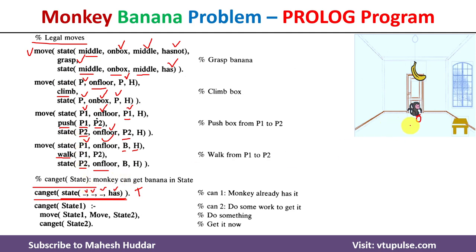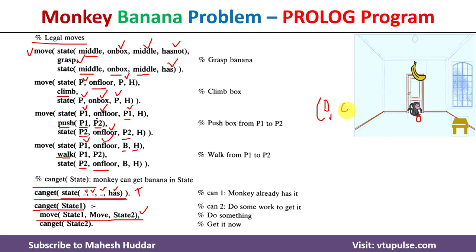At the initial stage, the monkey is present at door, the box is present at window, and the banana is hanging exactly at the middle of the room. The monkey is not having the banana, so can_get_state will return false. Because of that, we need to execute the possible moves again and again until the monkey gets the banana. The initial state is: monkey at door, on floor, box at window, not having banana.